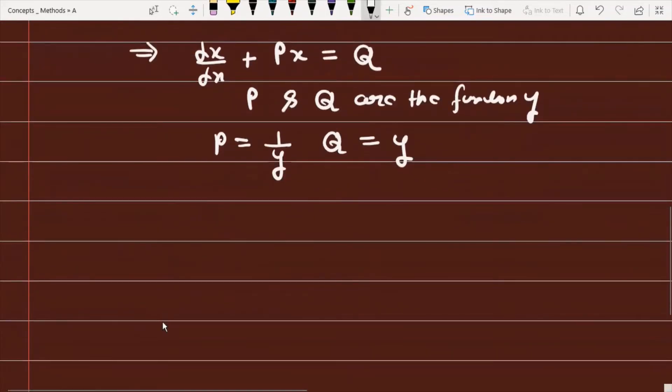First, we need to find the integrating factor (IF). The integrating factor is IF = e^(∫p dy) = e^(∫(1/y)dy).